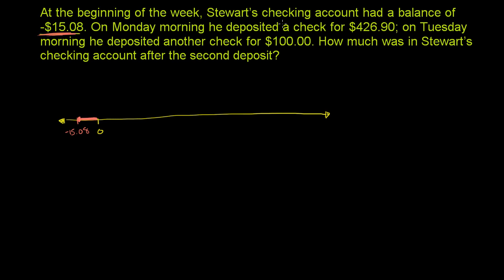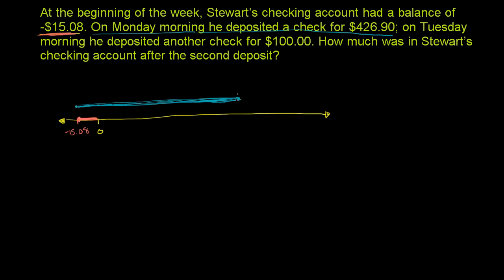On Monday morning, he deposited a check for $426.90. He started at negative $15.08 and we're adding $426.90 to that. The length of this blue arrow represents the $426.90 he's adding on Monday.